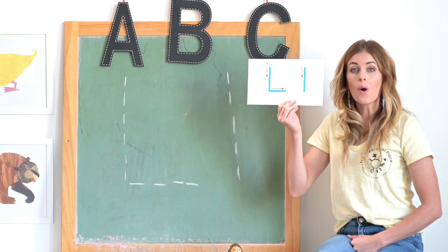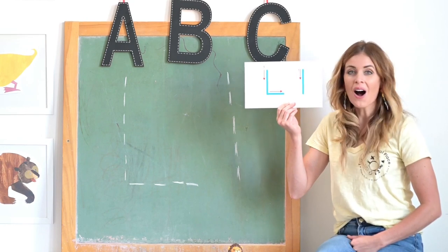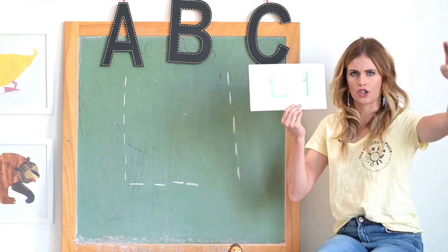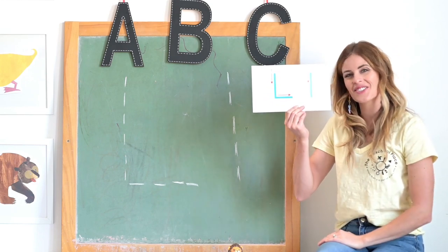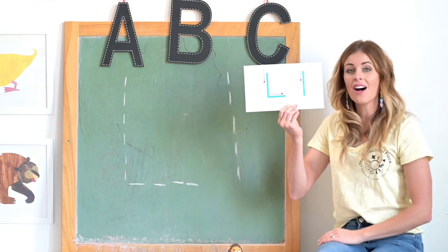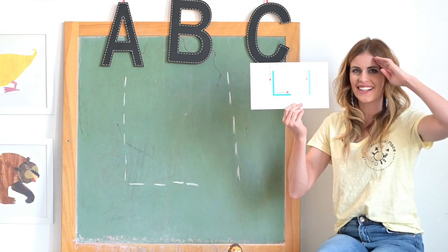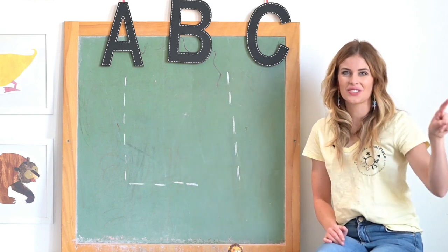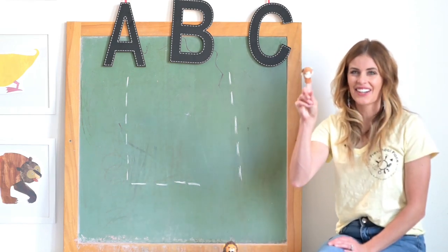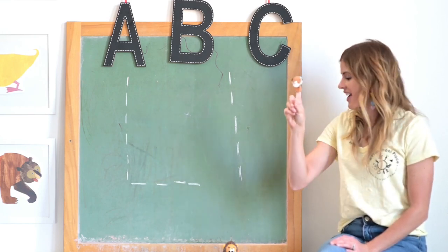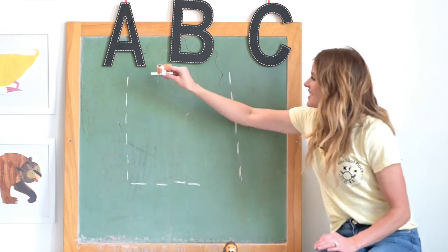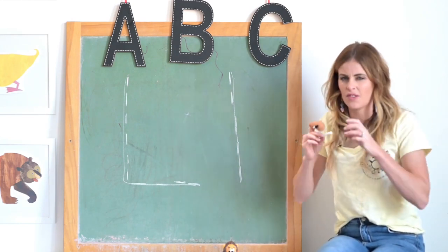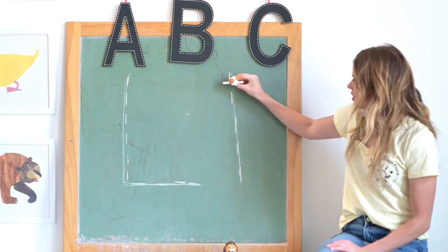This is the letter L. What letter features does the letter L have? You're right — I see straight lines in L: a soldier straight line and a sleeping straight line. In big L, small L has a soldier straight line. Down, across L. Can you say it? Down, across L. Look at my lion finger — this lion is going to help us write our L: down, across L.